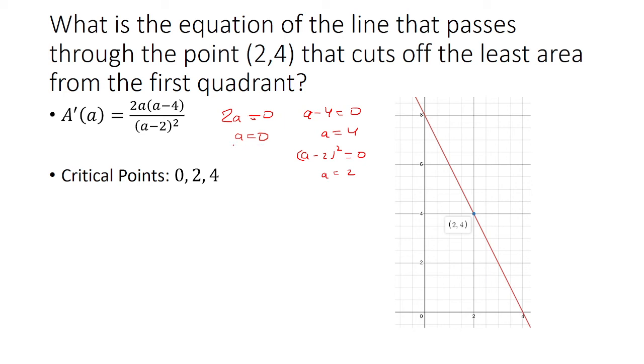So these first two make the derivative equal to 0. The last one makes it undefined. So these are going to be our critical points.